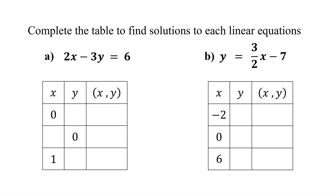In this lesson, you will learn how to complete a table of solutions to a linear equation in two variables. Linear equations in two variables have infinitely many solutions. For every value substituted for x, there is a corresponding value for y. This pair of values is represented as an ordered pair (x, y). A table of solutions lists these pairs of x and y values that satisfy the equation.